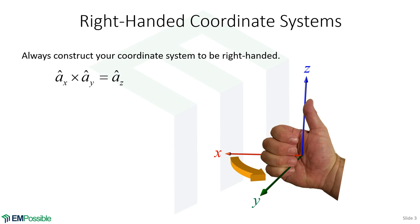In a right-handed system, think of the X direction cross product with the Y direction — that has to point in the Z direction. This is actually my right hand superimposed on a coordinate system. The fingers on the right hand curl in the direction of rotating X into Y. When you curl the fingers on your right hand that way, the thumb points in the Z direction. If we get this wrong, we'll end up with minus signs where we don't want them and missing minus signs where we actually want them.